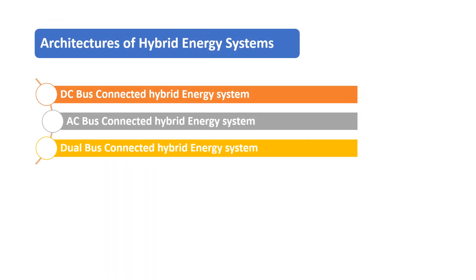Based on the common bus type, the architectures of hybrid energy sources are classified as DC bus connected, AC bus connected, and dual bus connected hybrid energy systems.